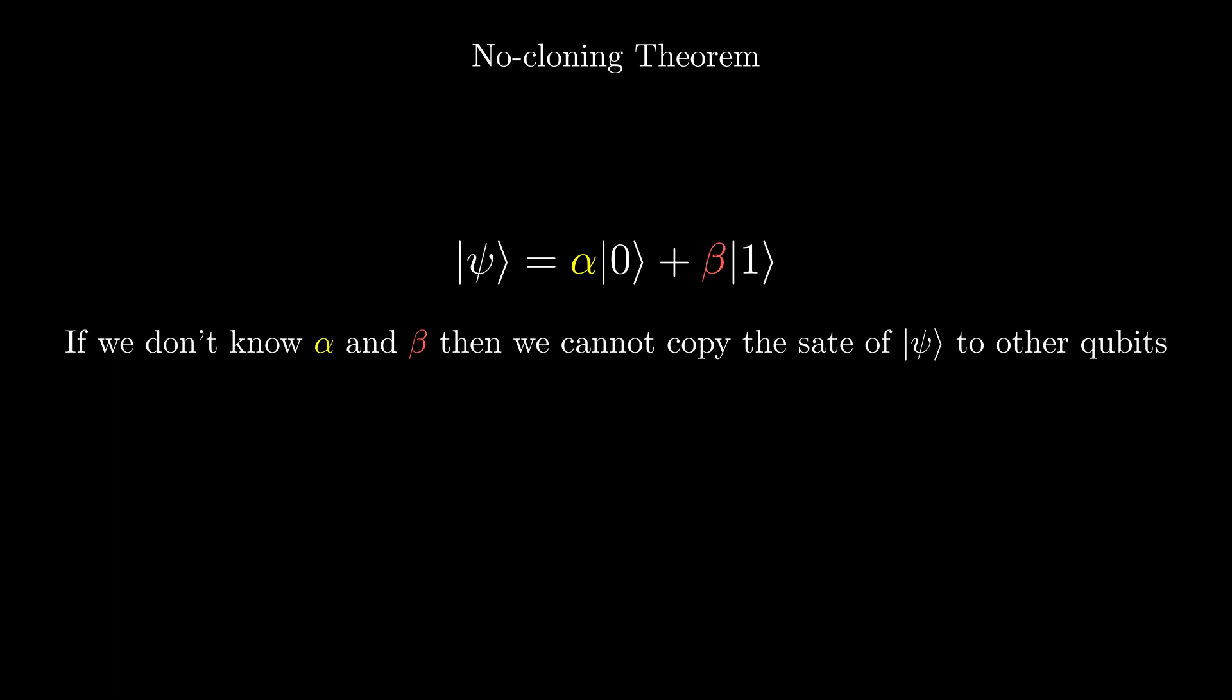We could easily copy qubit states where we know the amplitudes by applying the needed gates, but if we do not know the state, we cannot copy a qubit.